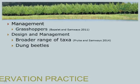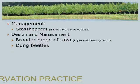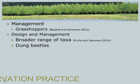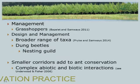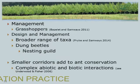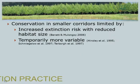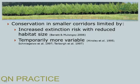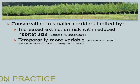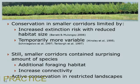In conclusion, previous work in this area has shown that management is more important than design for grasshoppers, but including a broader range of taxa we find that both design and management are important — this seems to be the case for dung beetles. Small corridors seem to add significantly to ant conservation, but we must remember there may be complex abiotic and biotic interactions not taken into account by the present study. Conservation in smaller corridors is limited by increased extinction risk from reduced habitat size, and these smaller areas are temporally more variable and do not necessarily guarantee species persistence. Still, the smaller corridors contain a surprising amount of species and provide additional foraging habitat and increased connectivity across this landscape, and active conservation planning and management may be valuable in areas restricted to only retaining smaller natural patches.